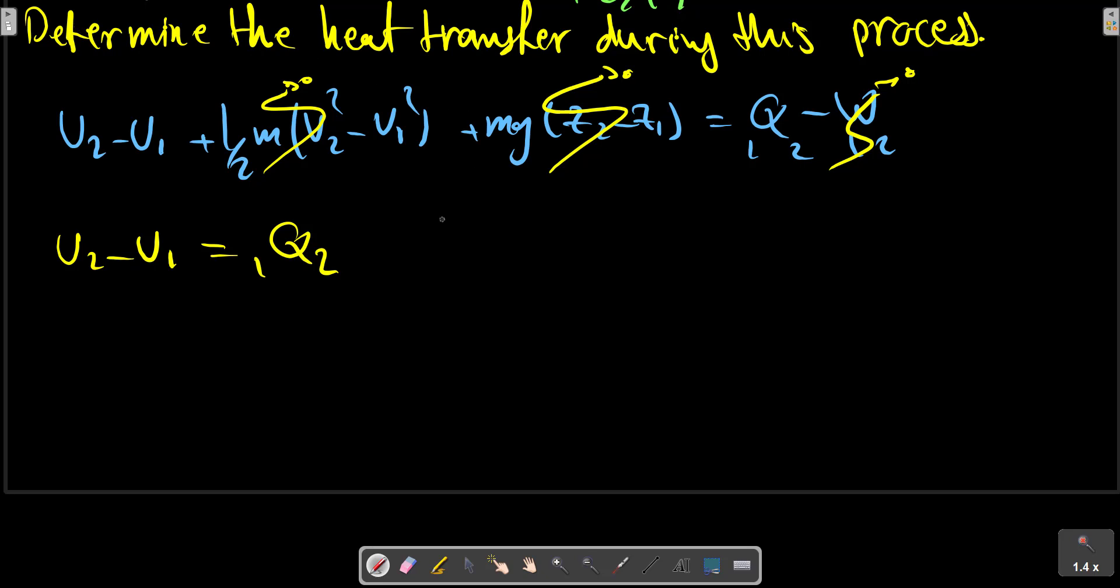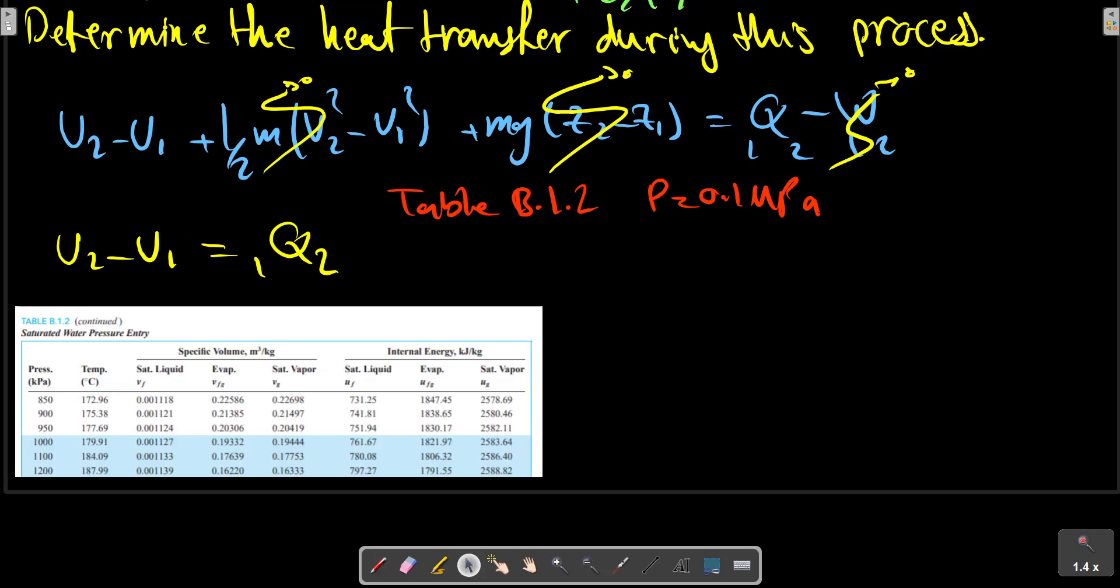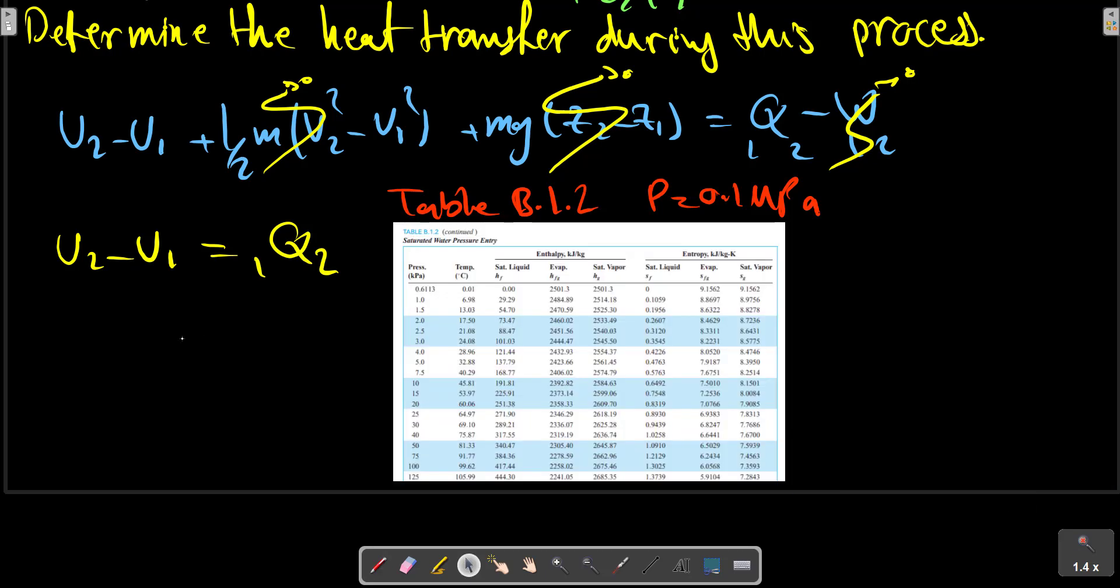At first, for the two-phase flow, we should use table B1.1 at temperature, or table B1.2 at pressure. P equals 1.0 megapascals. The table is shown in this picture. At the pressure equals to 1.0 megapascals, we should check the table, because 1.0 megapascals equals 1000 kilopascals.